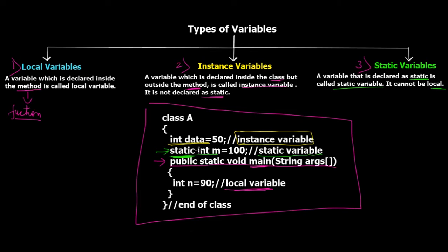There are differences between a normal variable and a static variable which we'll see in detail in further tutorials. For now, understand that static variables are at a class level, while instance variables are at the object level. To access an instance variable you need to create an object; to access a static variable you can directly use the class. These are the three types of variables, and now let's move on to data types.